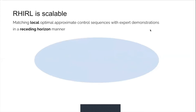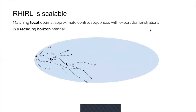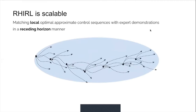To scale up, our RH-IRL computes the local optimal policy with receding horizons rather than a global optimal policy, and then we match them with expert demonstrations locally in succession. The local approximation and matching substantially mitigate the impact of high-dimensional space and improve the sample efficiency of receding horizon IRL at the cost of a local rather than a global solution.